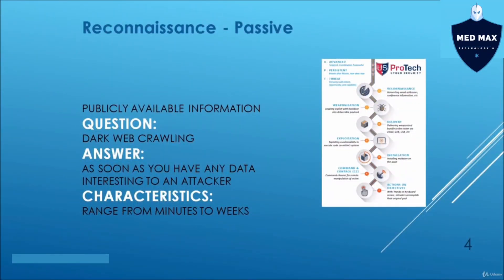The first step is reconnaissance — finding publicly available information using WHOIS, domain name server lookups, checking their servers using Netcraft and other tools, including Google searching to find usernames, passwords, and domain details. You can also go into the dark web to find accounts, data, or passwords for a particular enterprise. This could range from minutes all the way to weeks or months. Social media accounts are also good places to find details about the enterprise and individuals working there. This is passive reconnaissance — finding all publicly available information without directly interacting with the enterprise.